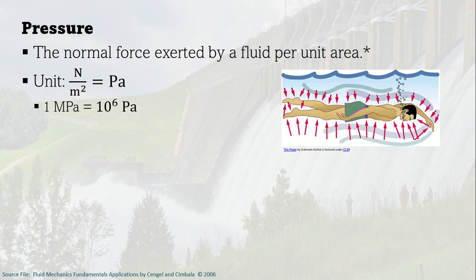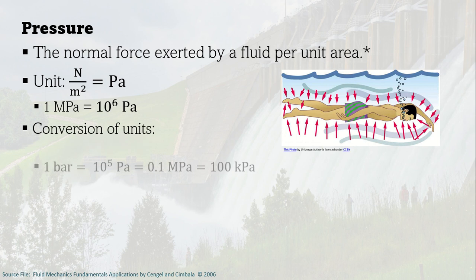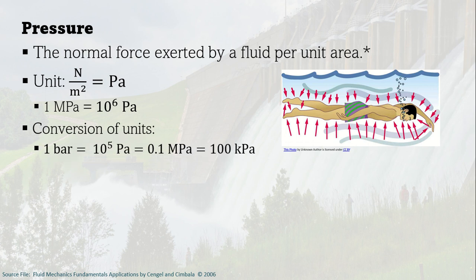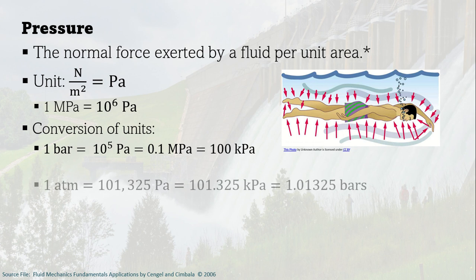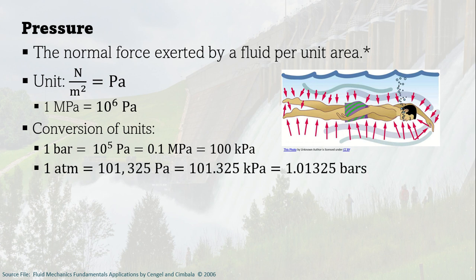The unit for pressure in SI is Newton per meter squared, which is equivalent to Pascal. Sometimes we use large pressures such as 1 megapascal, denoted by 1 MPa, which is equivalent to 1 million Pascal or 10 to the power of 6 Pascal. There are also conversions between bar, Pascal, megapascal, and kilopascal, as well as between atmospheric pressure, Pascal, kilopascal, and bars.